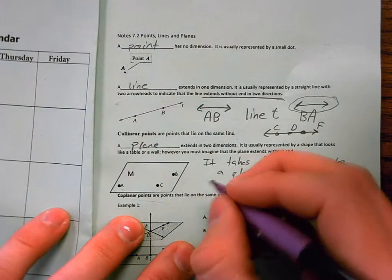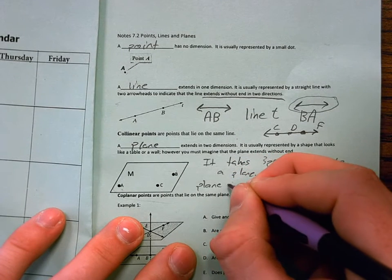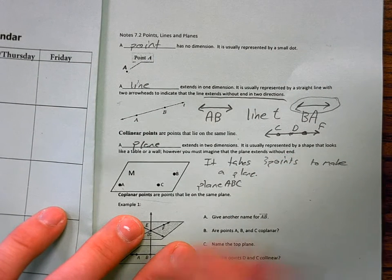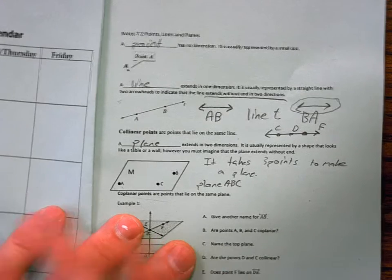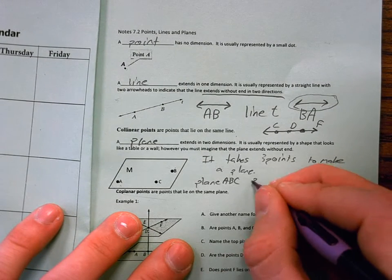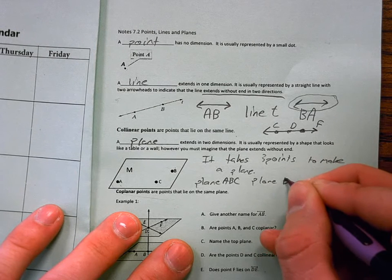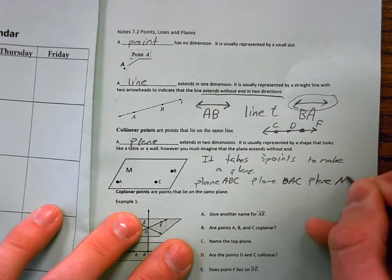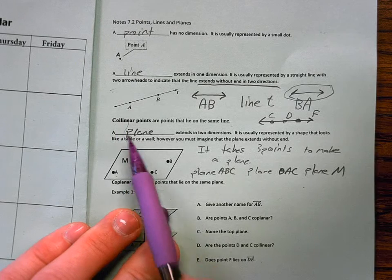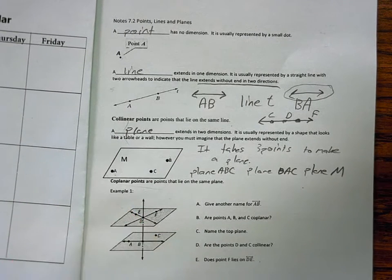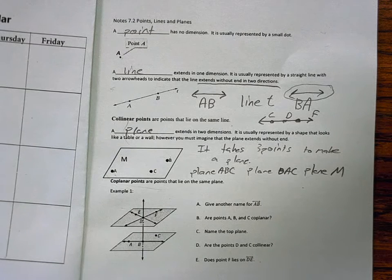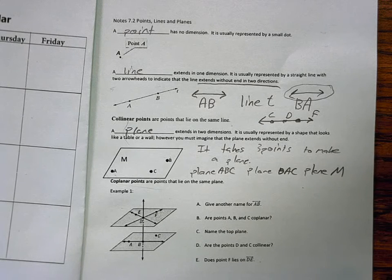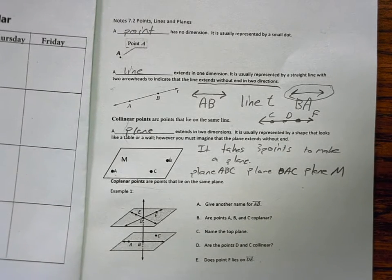So it takes three dots to make a plane. If we had to name this plane, we could call it plane ABC. It doesn't have to be in alphabetical order. The order of the letters does not matter. So we can give it another name, plane BAC, or I can call it plane M. M is not a point. It's naming the plane. See how it does not have a dot? Okay. Remember, it takes three points to make a plane. Any three points can make a plane.